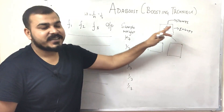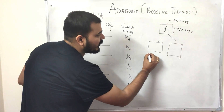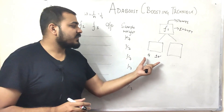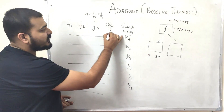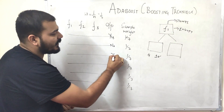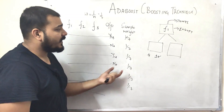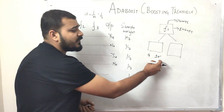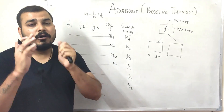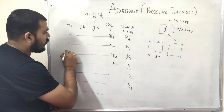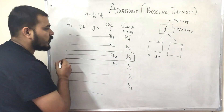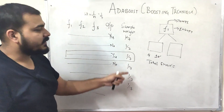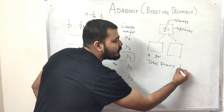In step 2, suppose the selected stump correctly classified four records and incorrectly classified one record — this is a binary classification with yes or no output. For the incorrectly classified record, we need to find the total error. The total error is calculated by summing up all the sample weights of the incorrectly classified records. In this case, with one error, the total error is 1/7.